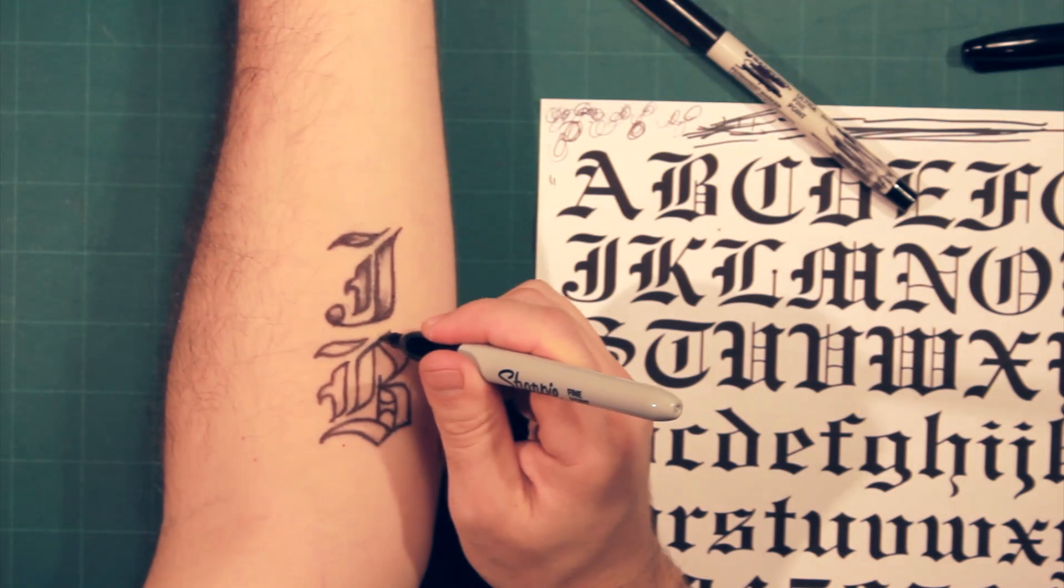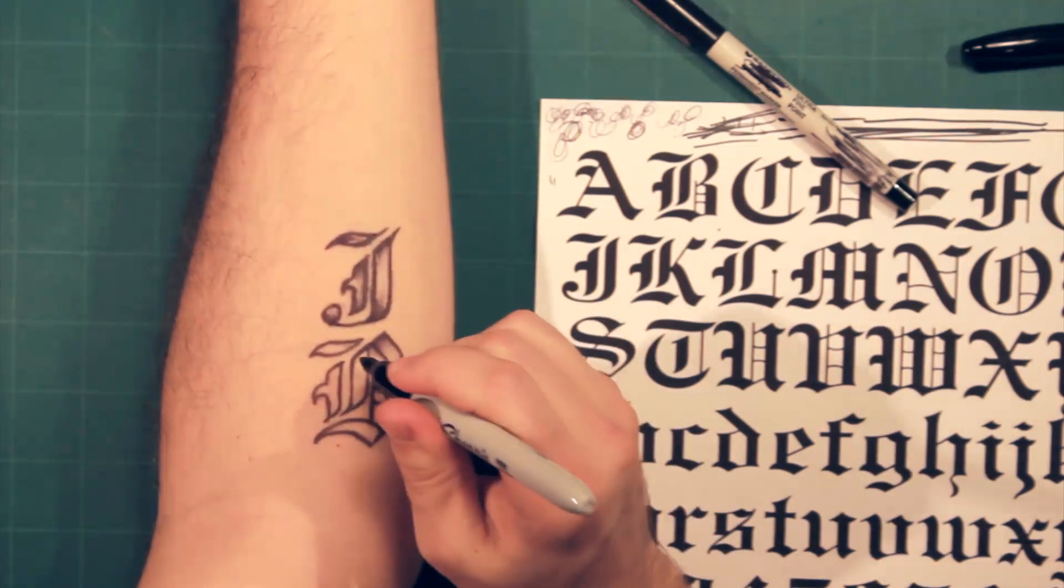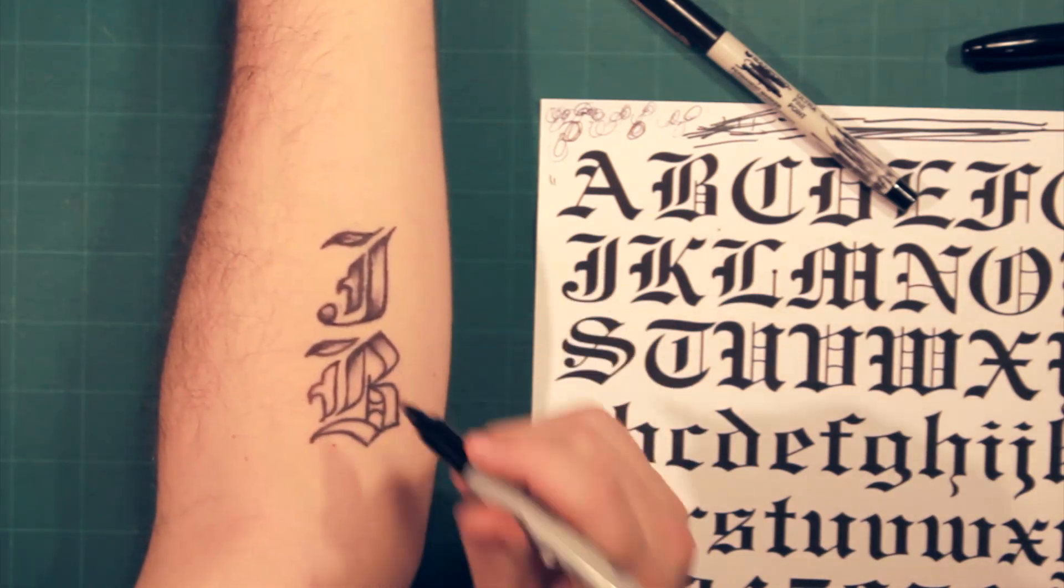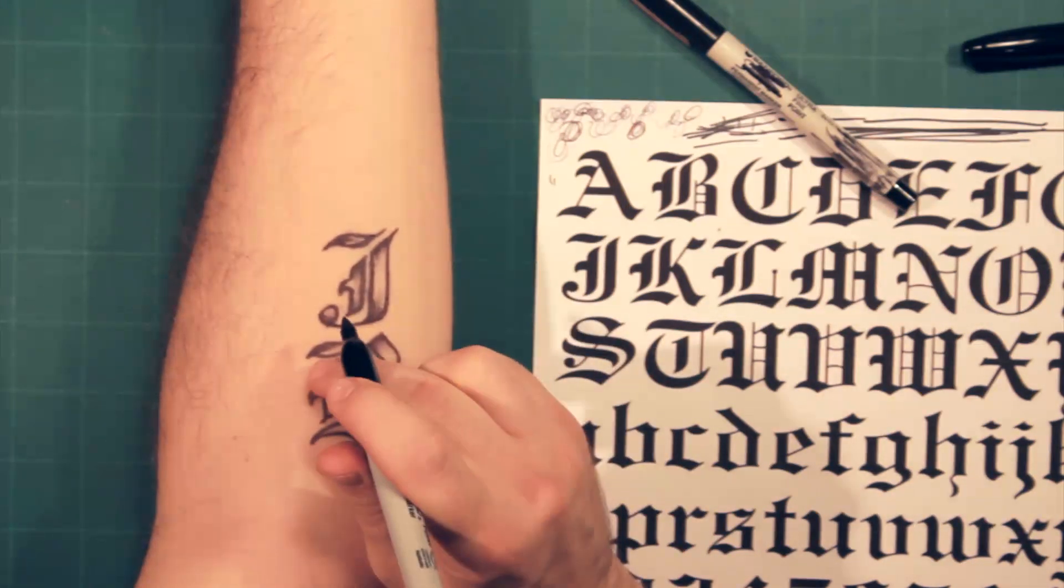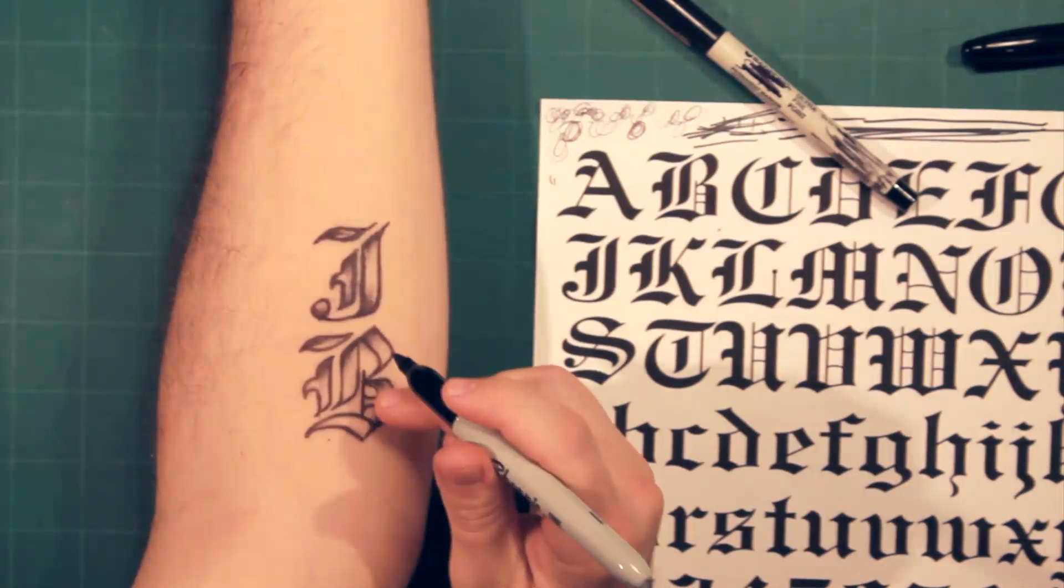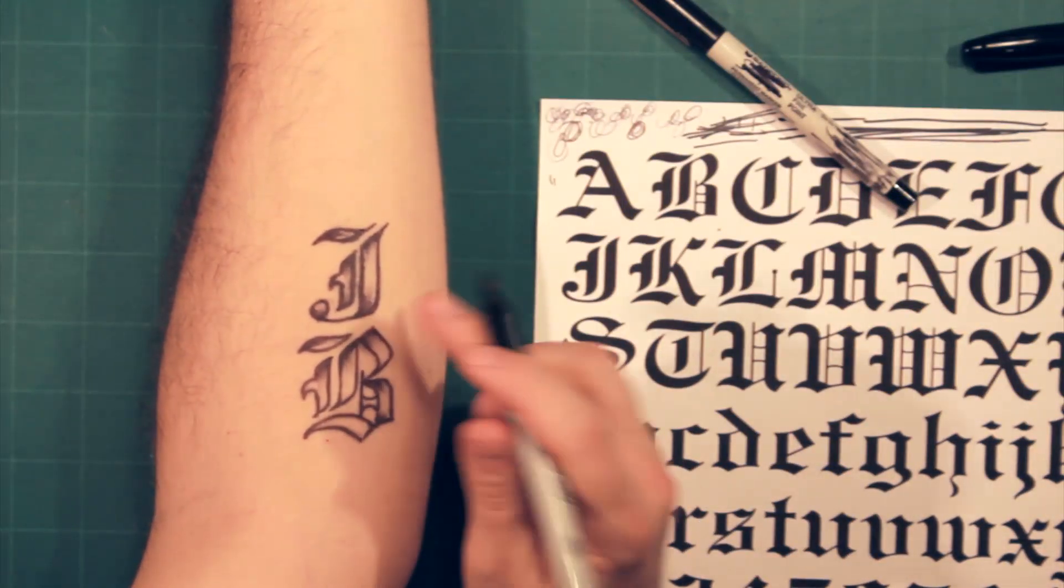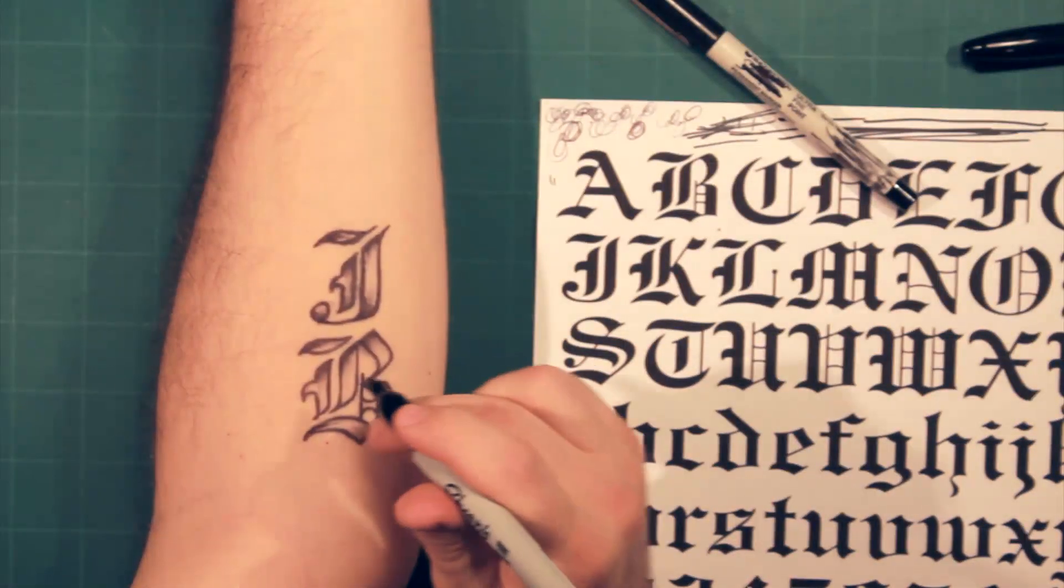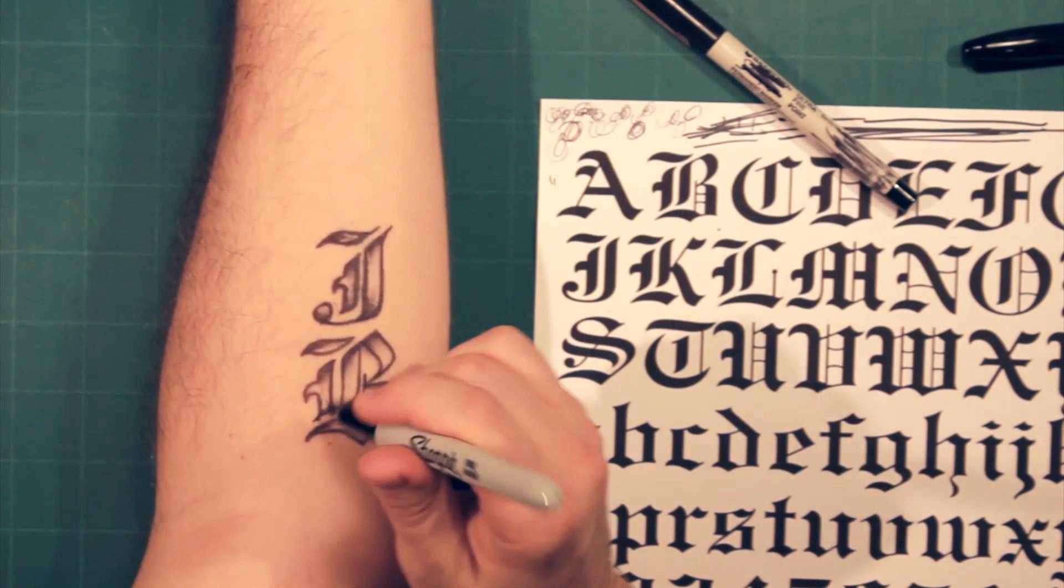So now I'm going to go in and do my shading. So I do a little strip, smudge it, do a little strip, smudge it, a little dot, smudge. So you can see it's really coming to life here. Bring that around, fade that up, this way, this way, and just a couple more here.